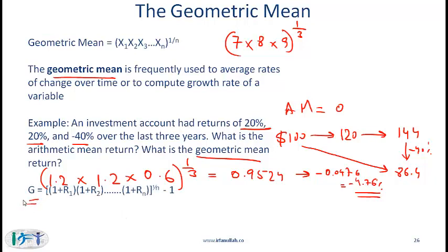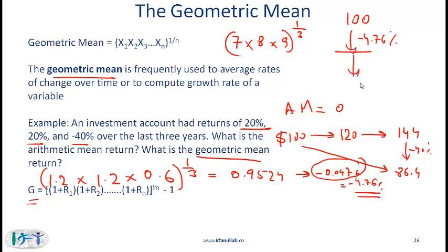The way we solve this is: 1 plus the return for year 1, which is 1.2, times 1 plus the return for year 2, which is 1.2, times 1 plus the return for year 3, which is 0.6, all raised to the power of 1/3, minus 1. This gives us 0.9524, meaning $1 goes down to $0.9524 on average each year, equivalent to a return of minus 4.76%. To verify: starting with $100 and losing 4.76% each year for three years, you end up with $86.40.